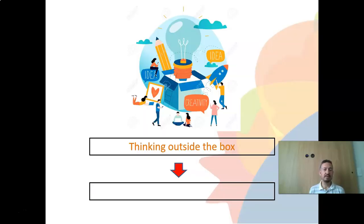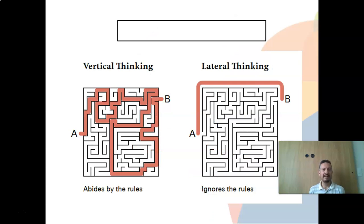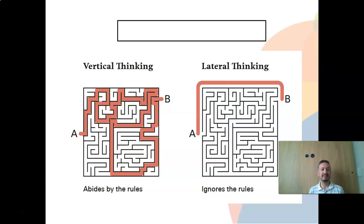Lateral thinking is also referred to as thinking outside the box. Vertical thinking — the opposite — means following the rules. For example, if you have to go from point A to point B through a maze, vertical thinking means going through the hardest route. But with lateral thinking, you ignore the rules and take the easiest way — like a shortcut from A to B. That's lateral thinking: coming up with original, creative solutions.